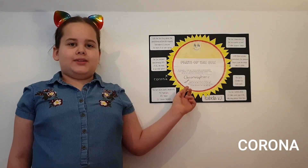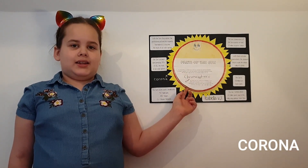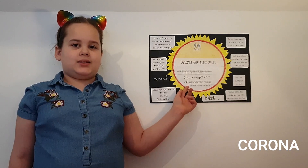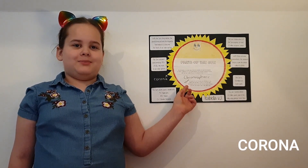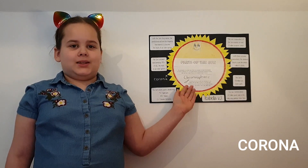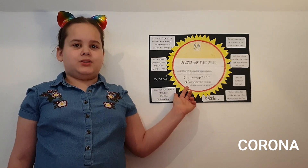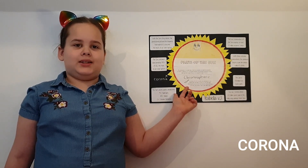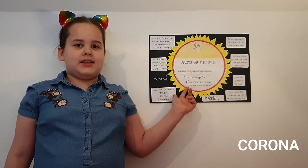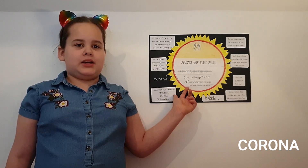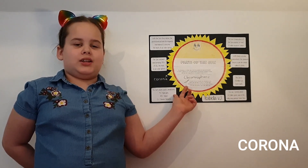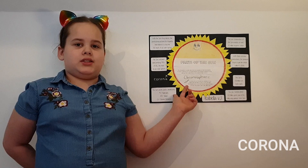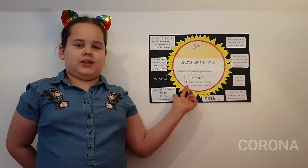The corona is the Sun's extended outer atmosphere. It is the luminous white halo visible in a photo of a total solar eclipse. Mysteriously, the corona is much hotter than the surface of the Sun — so hot that it also produces a type of light called X-rays.